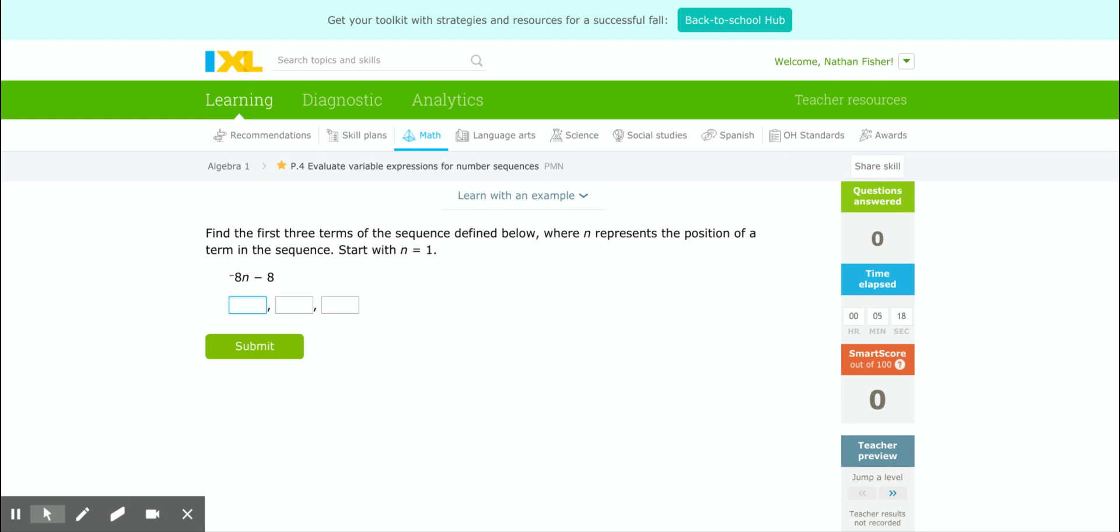Adding and subtracting repeatedly, or even if it gets geometric, would be multiplying and dividing repeatedly. Let's take a quick glance at how we would approach this IXL p.4, and then that'll give you an idea of what we mean by sequences. So it asks for the first three terms of the sequence defined below, where n represents the position of a term in the sequence. So start with n equals 1. That could sound intimidating when it throws that out to you, and then it also gives you an expression down here as well.